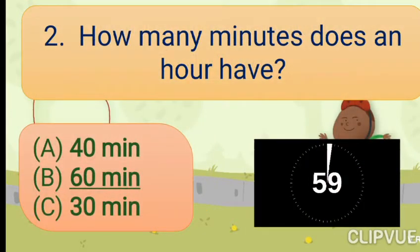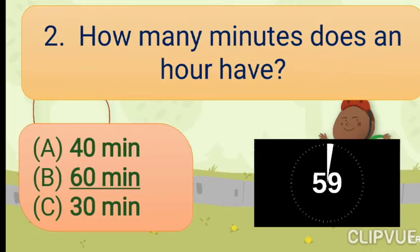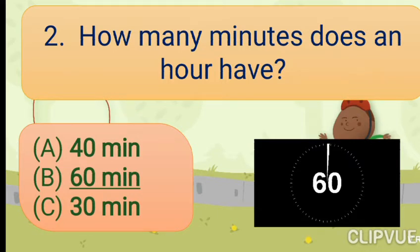How many minutes does an hour have? Option A: 40 minutes. Option B: 60 minutes. Option C: 30 minutes. Answer is Option B: 60 minutes.